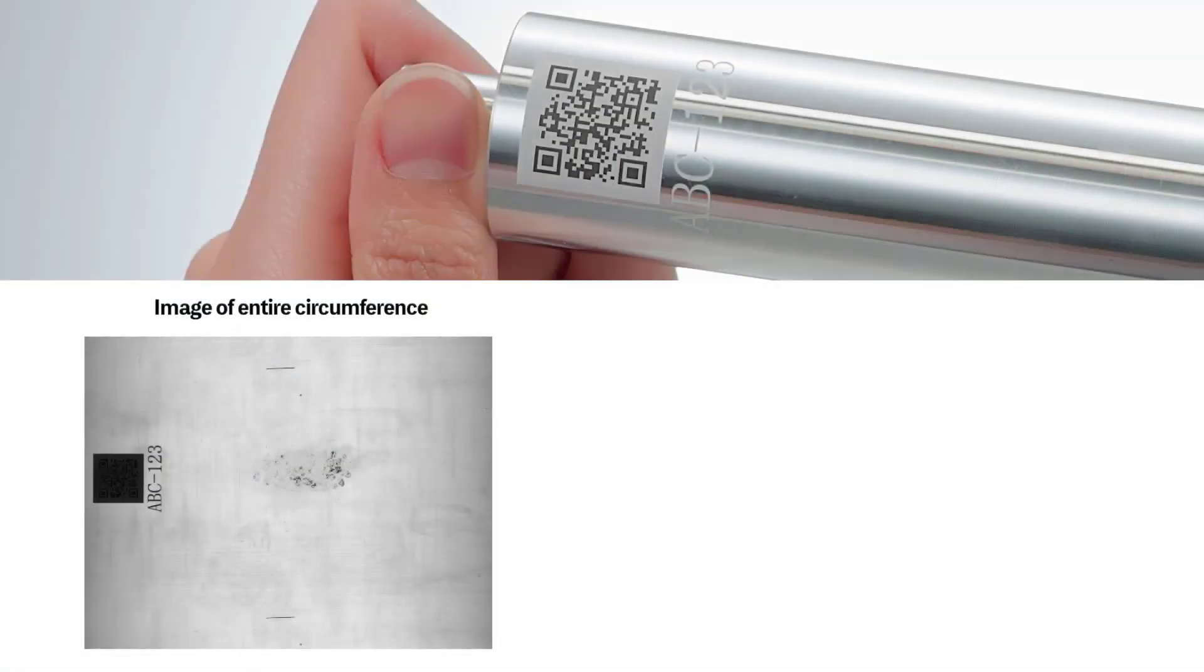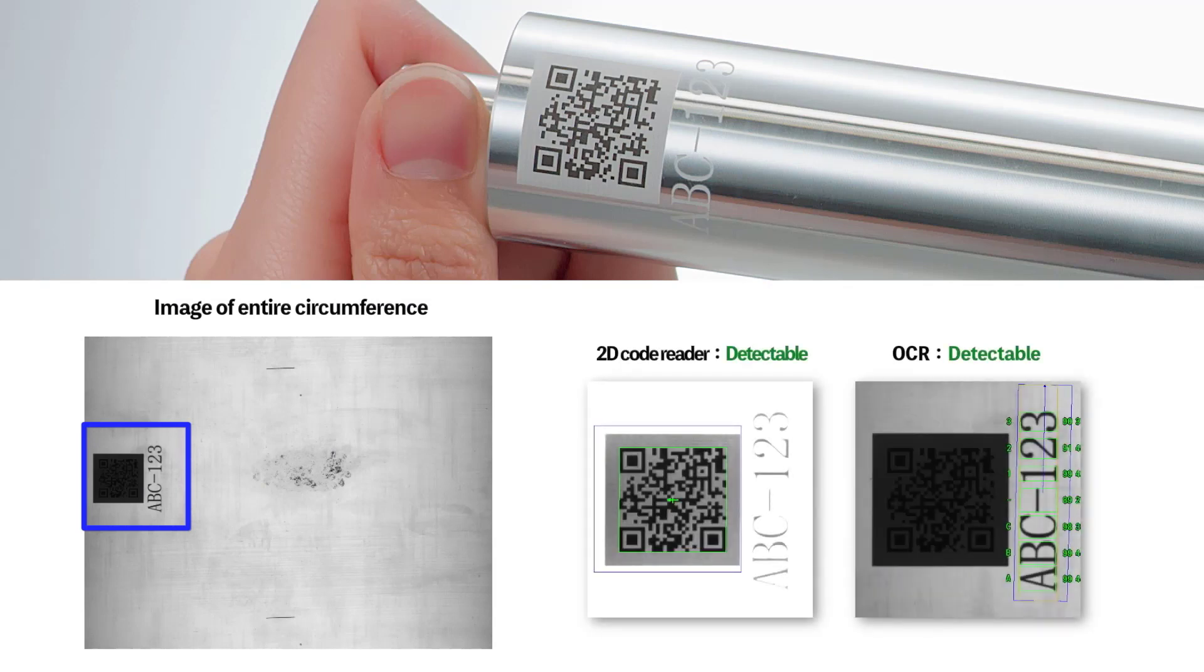With the one resultant image, we're able to pick up several of the inspection targets. First, we're able to read the 2D code and the ABC123 text.